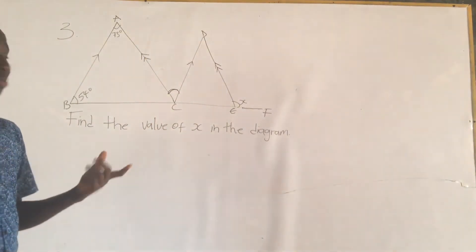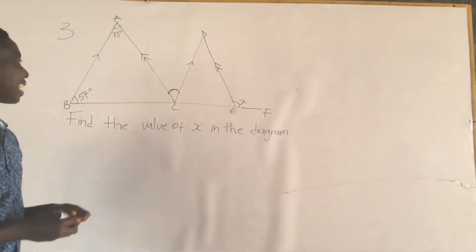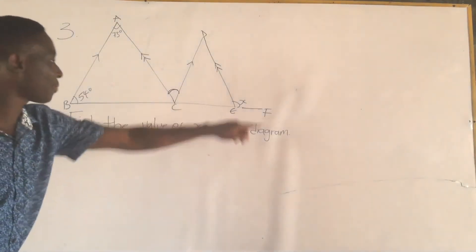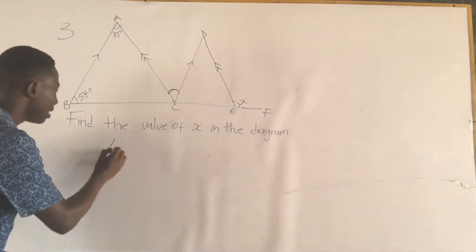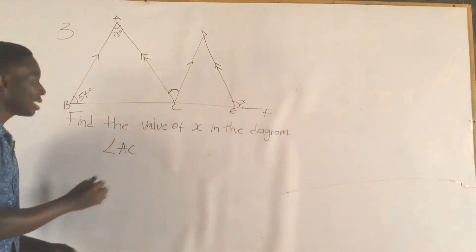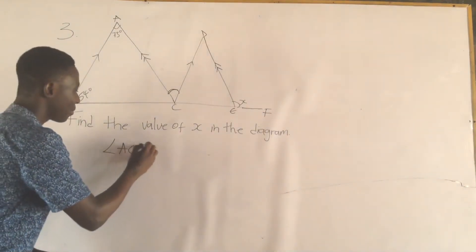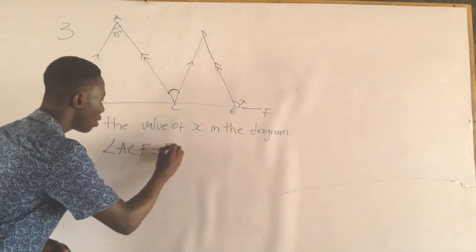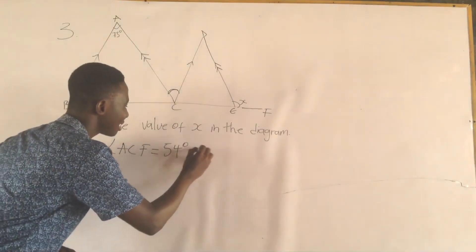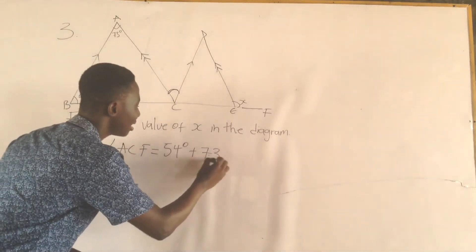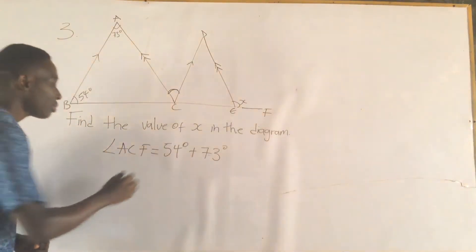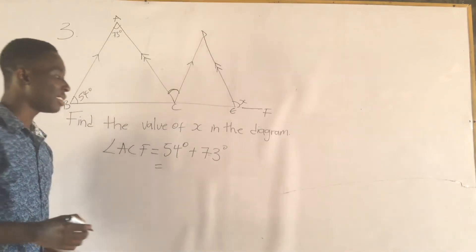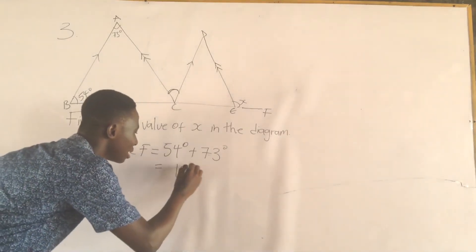Now, using this property, we can say that angle ACF is equal to 54 degrees plus 73 degrees. So this is equal to 54 plus 73, which gives us 127 degrees.